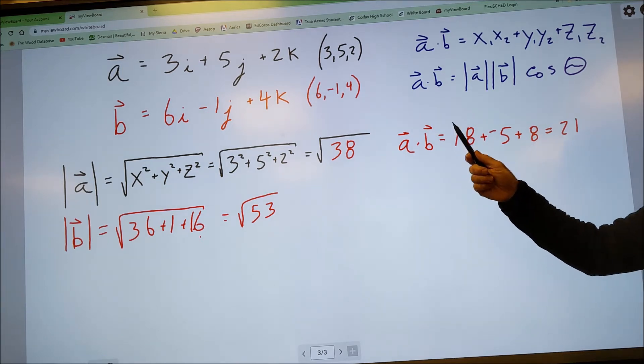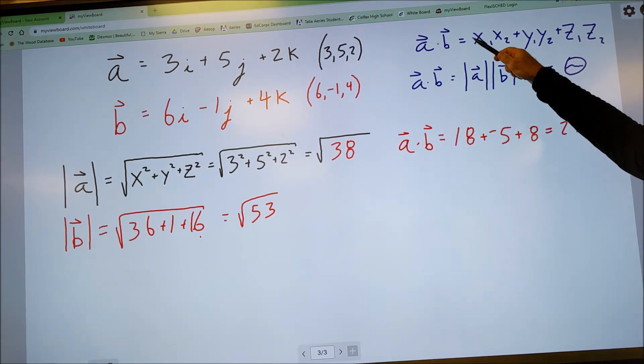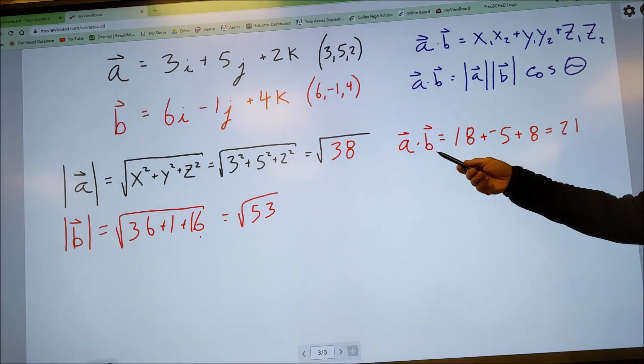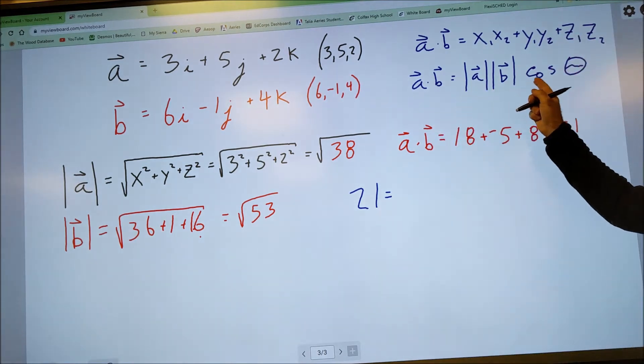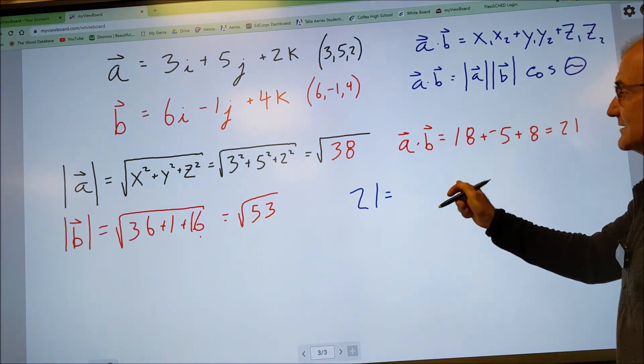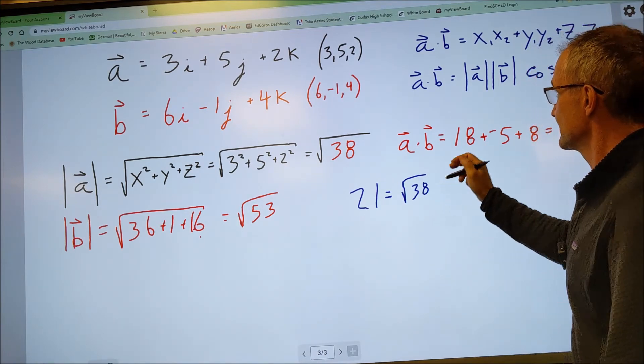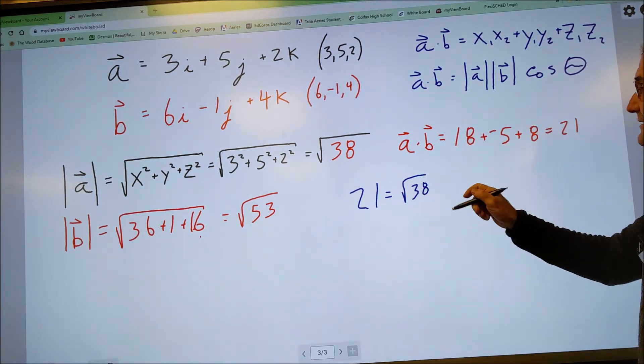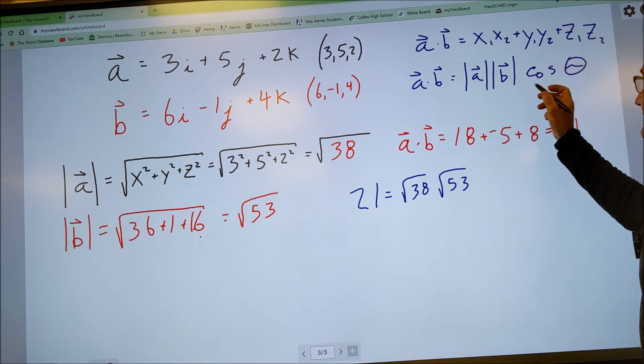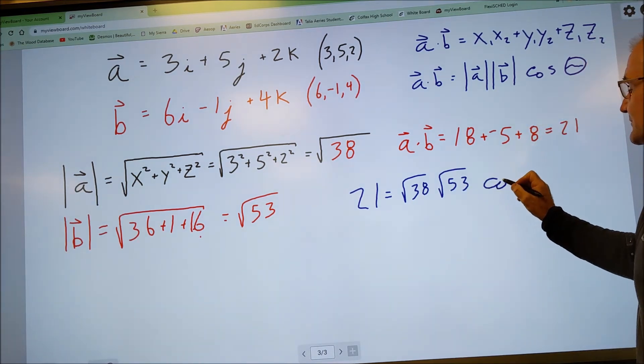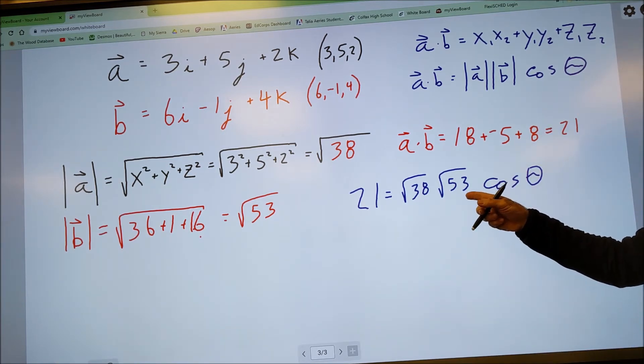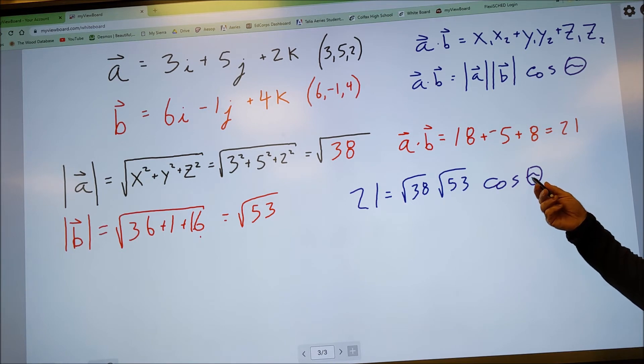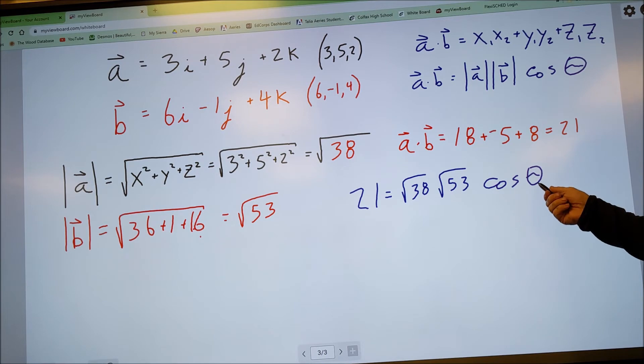Now if I want to find the angle between those two vectors, I'm going to set those two equations equal to each other. So the dot product again is 21. It's going to be equal to the other equation for dot product, the magnitude of A, square root of 38, times the magnitude of B, square root of 53, cosine of the angle between them. So I've taken one dot product equation, set it to the other dot product equation. I have one unknown theta. That's going to be the angle between the two vectors in three-dimensional space. So I just have to solve for that theta.